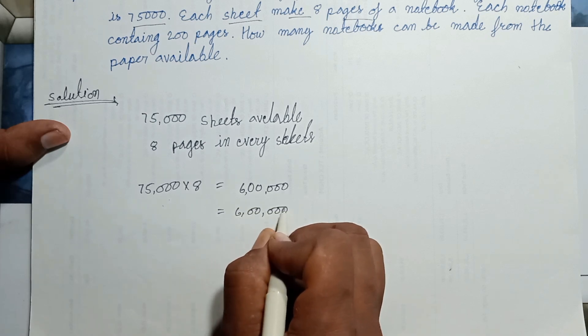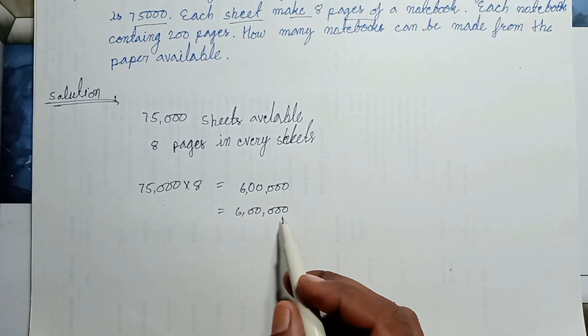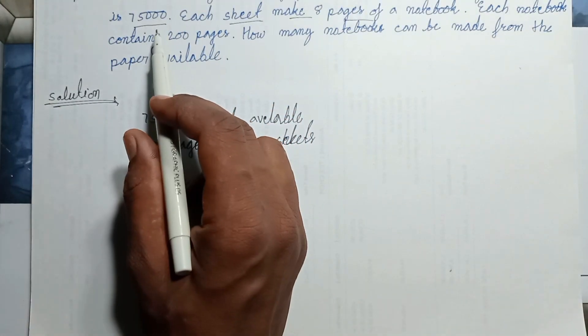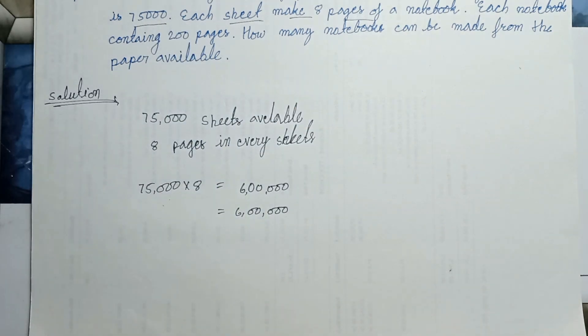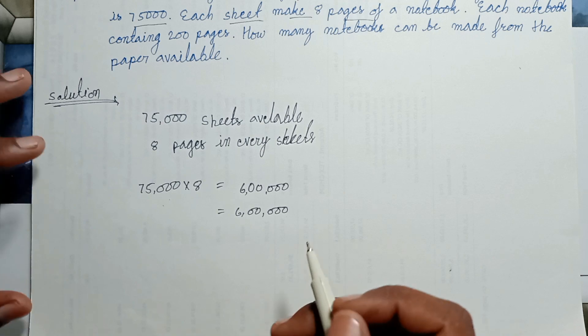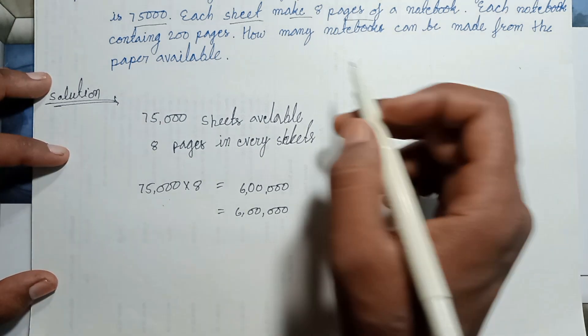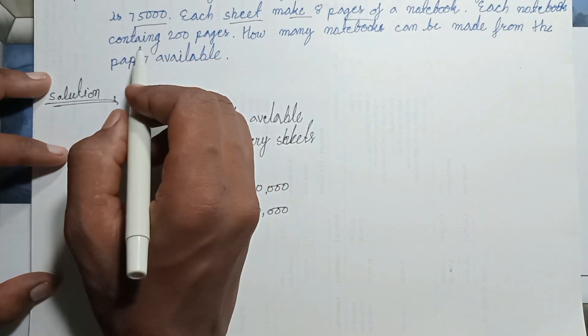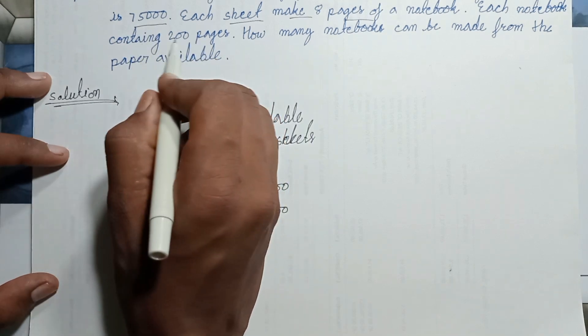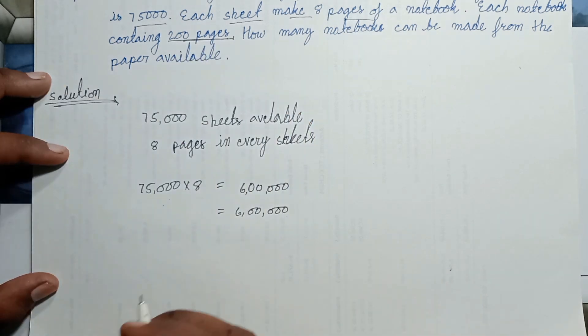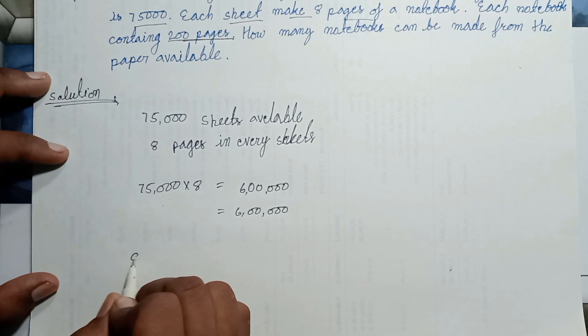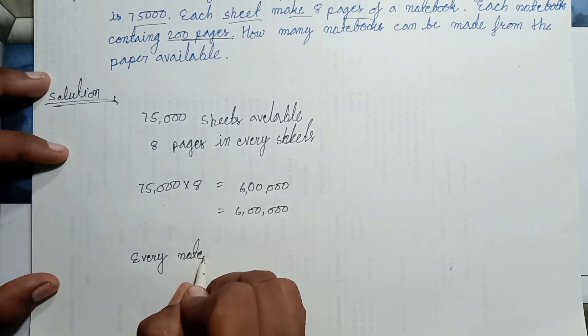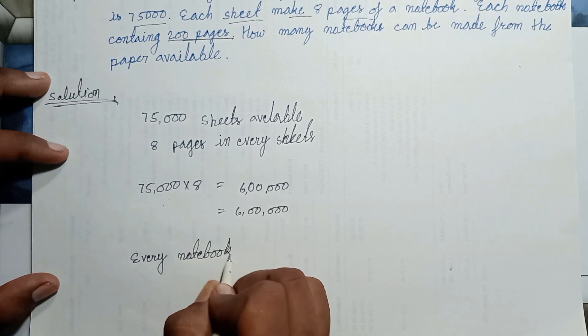How many pages? 6 lakh pages available in these 75,000 sheets. How many books can be made from the available paper? Every notebook has 200 pages.